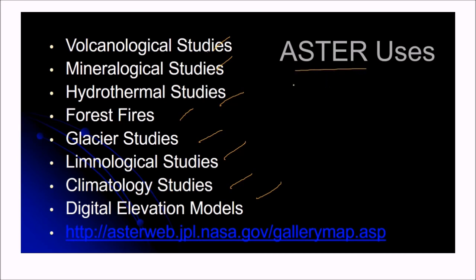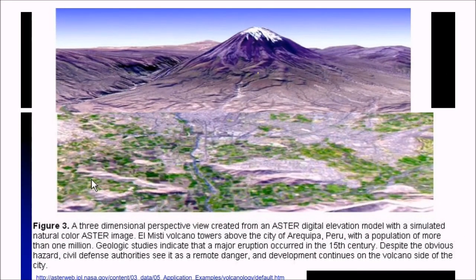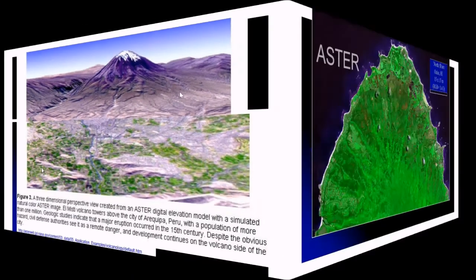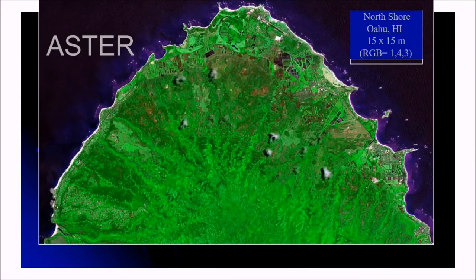ASTER is covering 99% of the Earth and it has given the 99% coverage DEM of the whole globe. This is a 3 dimensional perspective view created from ASTER DEM. This is a digital elevation model with a simulated natural colored ASTER image which is draped on it. You can see the utility of the DEM which is produced by ASTER.